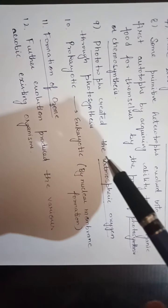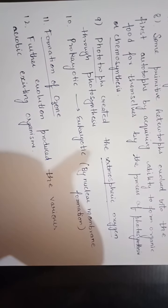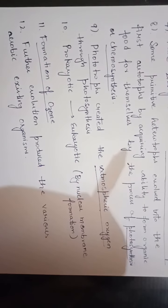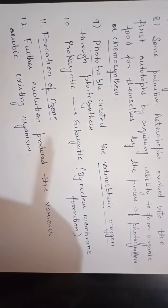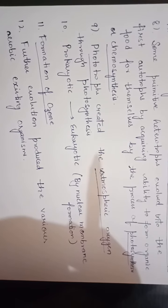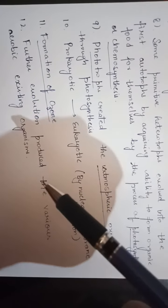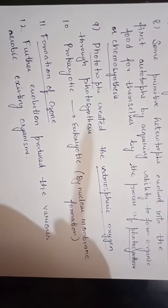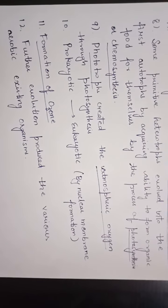Further evolution produced various aerobic and other existing organisms. This is all about the origin of life — how the first life originated from inorganic molecules. When the first primitive living cell arises from inorganic molecules, this is known as abiogenesis. When further evolution produces various aerobic or other organisms from the first primitive living cell, this process is known as biogenesis.